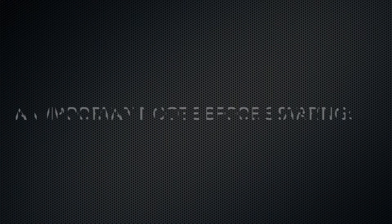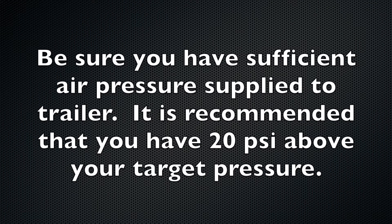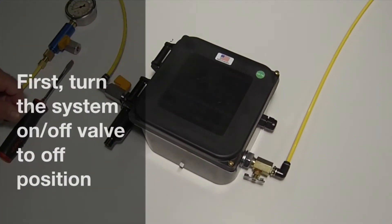It's important to note when adjusting the control box pressure, ensure that the air supply to the trailer is a minimum of 20 psi above your target pressure. Now let's get started.